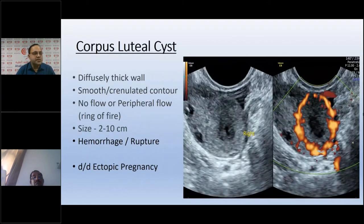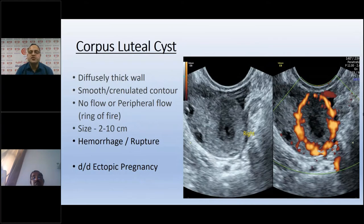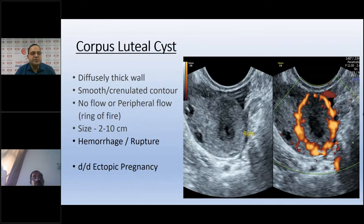A corpus luteal cyst on transvaginal ultrasound shows a diffusely thick wall, smooth or granulated contour, no flow or peripheral flow. Power Doppler shows a 'ring of fire' appearance around it — which can be alarming if unfamiliar. Size ranges 2–10 cm. Complications include hemorrhage or rupture presenting with acute pain. It is important to differentiate a corpus luteal cyst from an ectopic pregnancy in appropriate clinical situations.